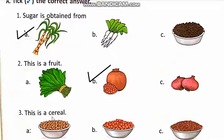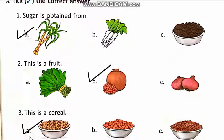Number three: This is a cereal. A: Wheat. B: Graham. C: Pigeon pea or lentils. The answer is A, Wheat. We write tick on option A, Wheat.